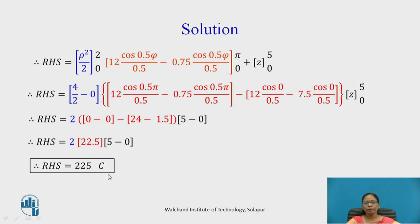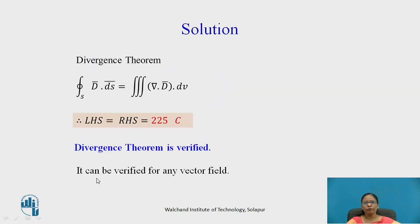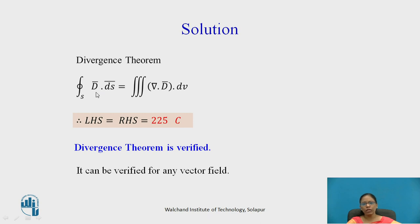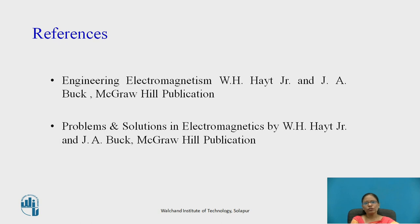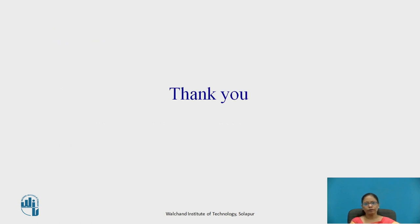As we saw at the start, the LHS calculated in part 1 gives 225 coulombs, and the RHS calculated in this video also gives 225 coulombs. Since both sides are equal, the divergence theorem is verified. This is true not only for this specific D-bar but for any vector field — the divergence theorem equation always holds. These are the references used for preparing this video. Thank you.